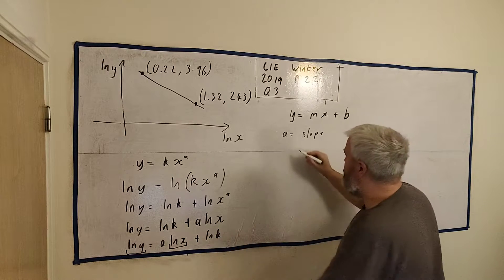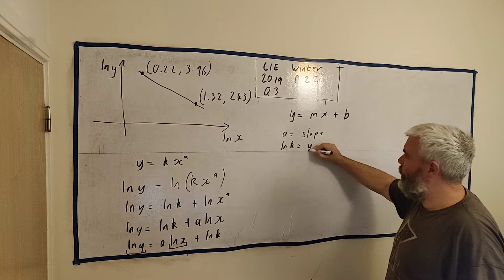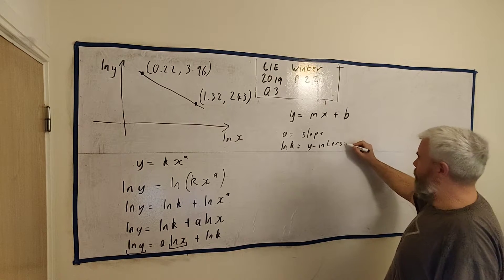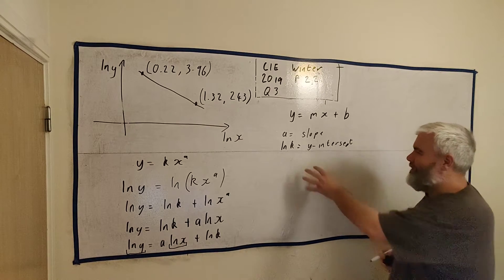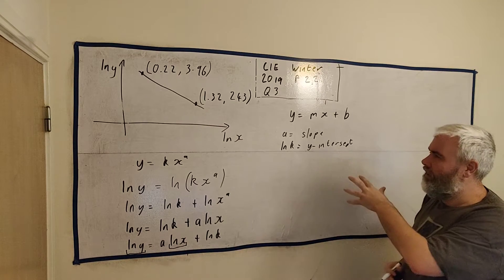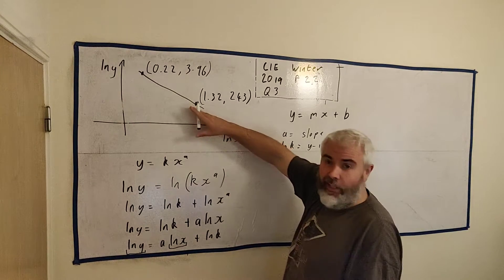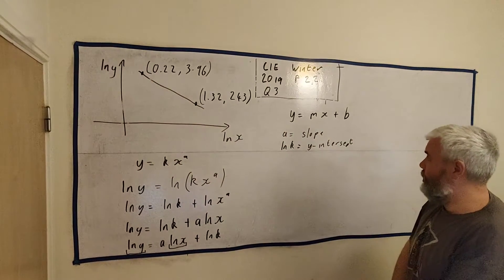So that leaves us that a is equal to the slope. And it also leaves us that the natural log of k is equal to the y-intercept. And in fact, I'm actually not going to use this bit of knowledge. I'll find natural log k a different way. Although you could get the equation of a line and find where it hits there. That is another way to do it.